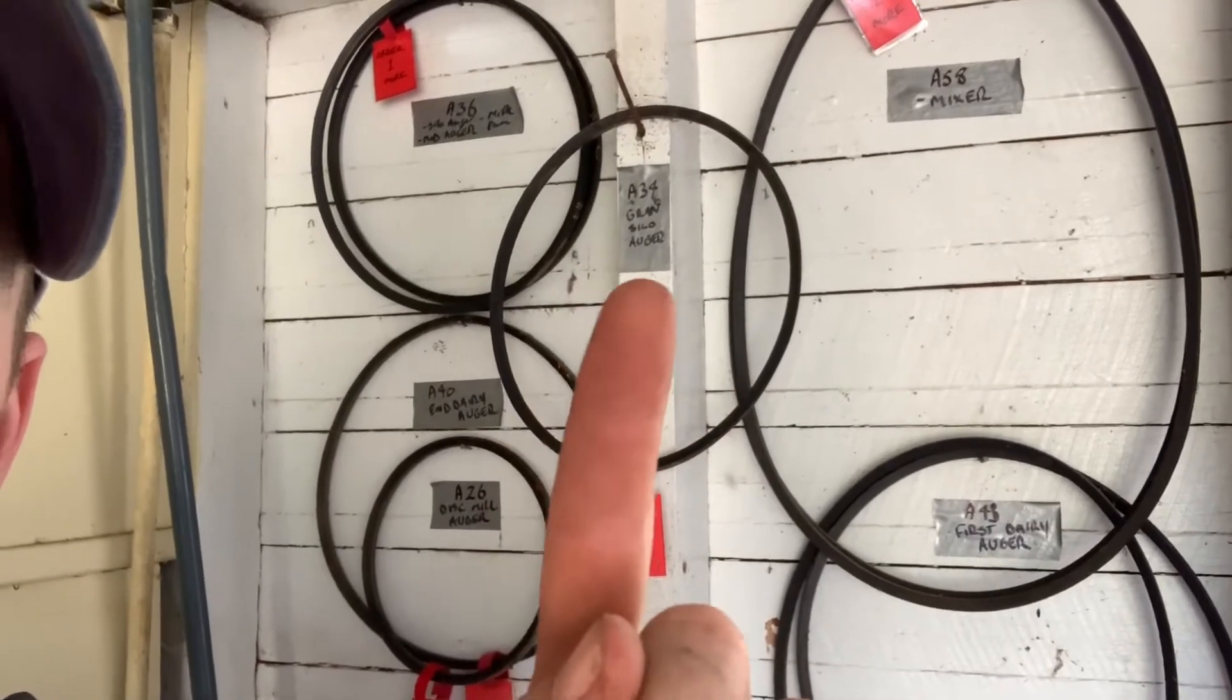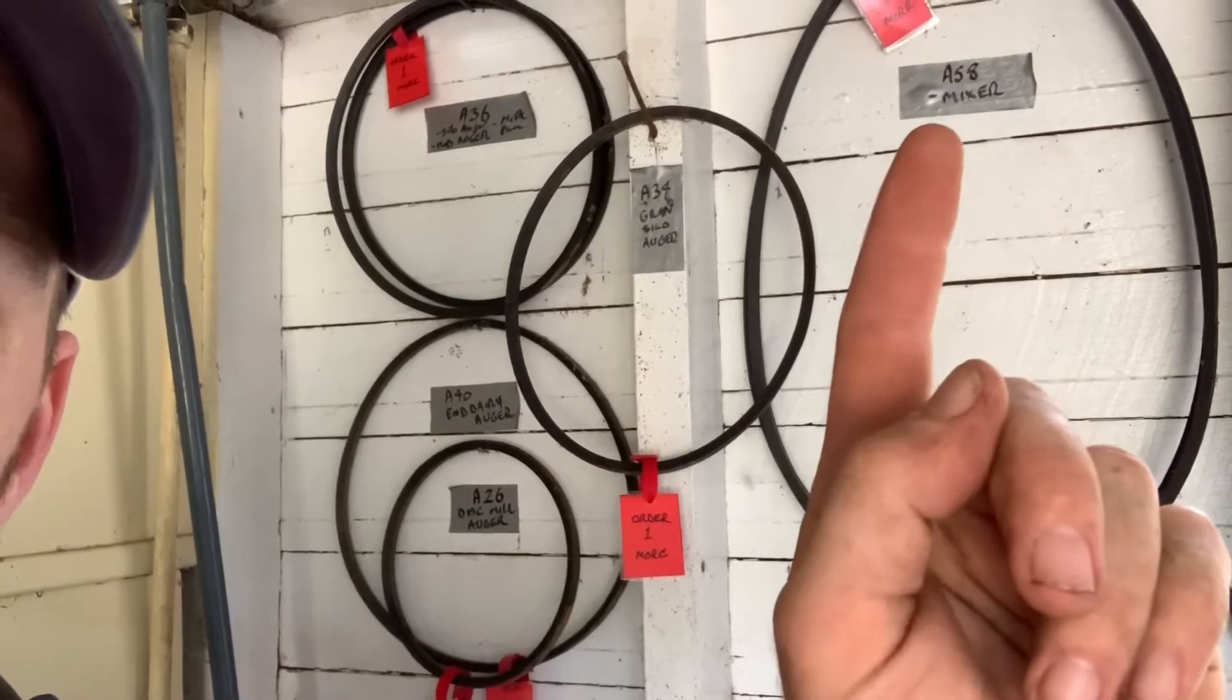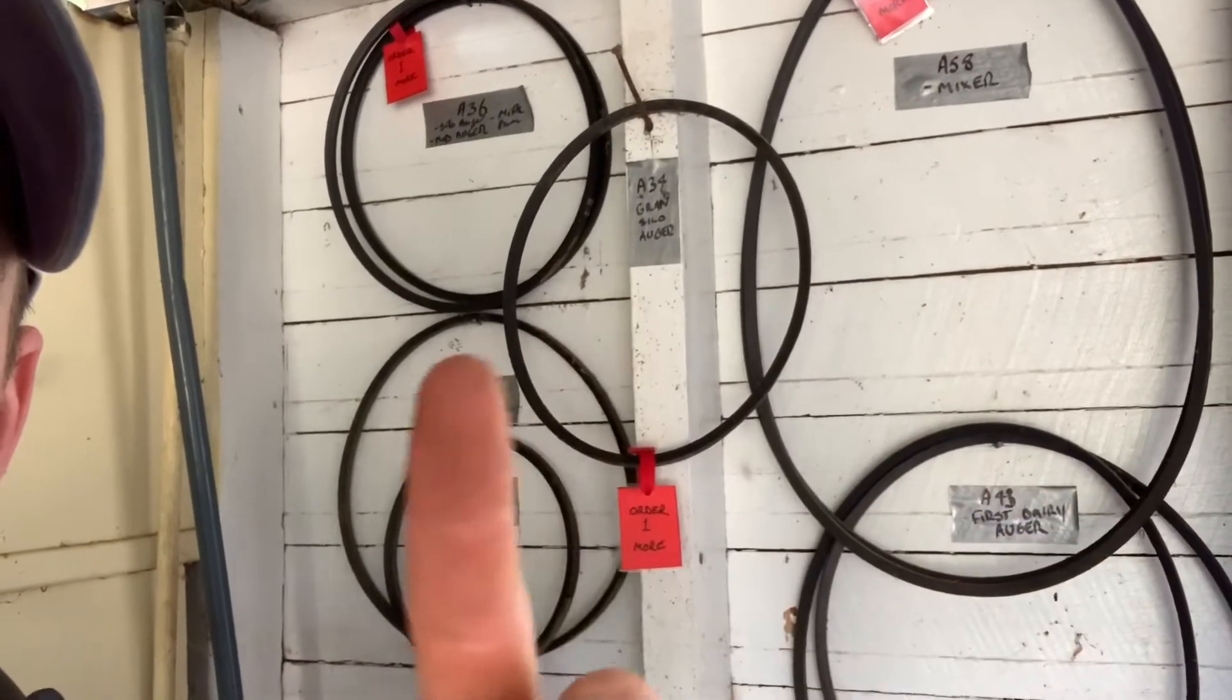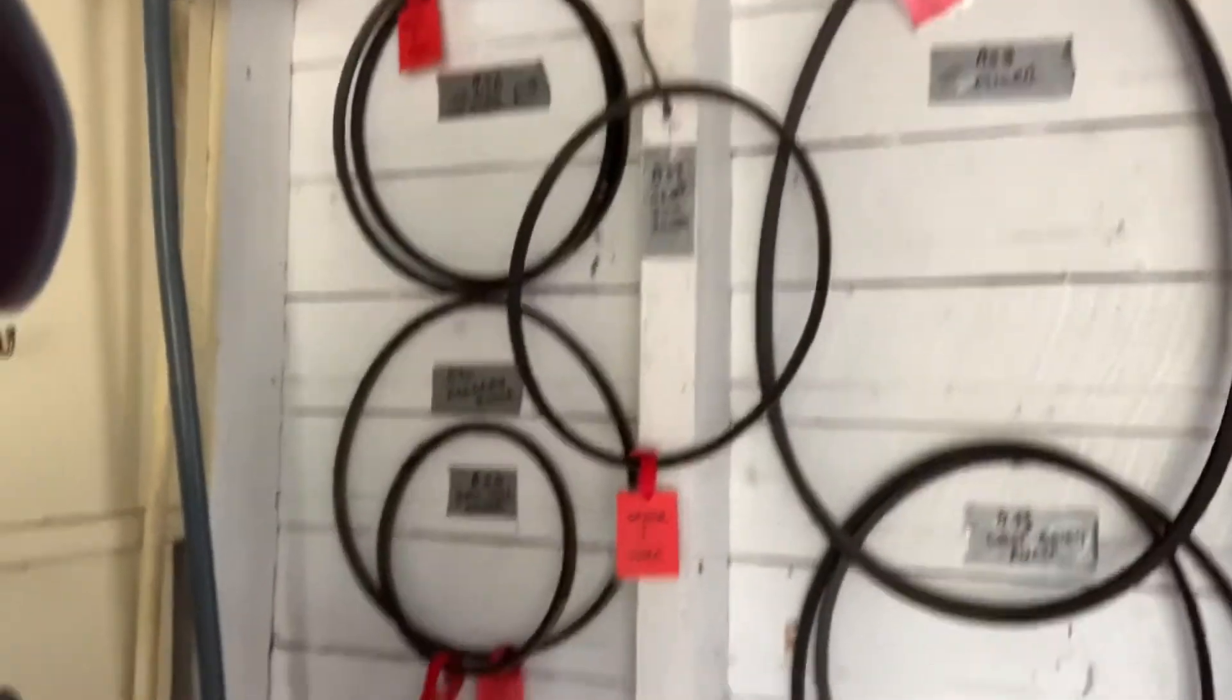and just a permanent marker, so we've got the name of the belt and where it goes. That one's for the mixer. That's really important how they're organized like that.